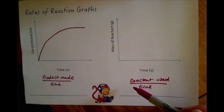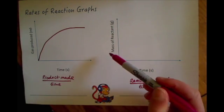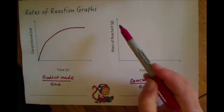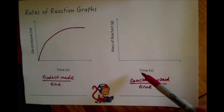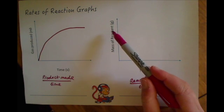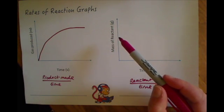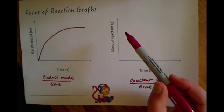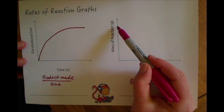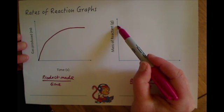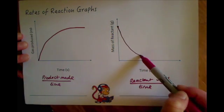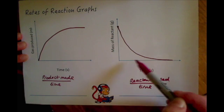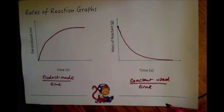Similarly, they might ask you to look at how much mass of a reactant changes over time. Since reactants are the things reacting together, we'd expect that to decrease over time. So you might have a graph that starts with a high mass of reactant, then over time that mass drops quickly as it's reacting, and eventually all of it will be used up in the reaction.